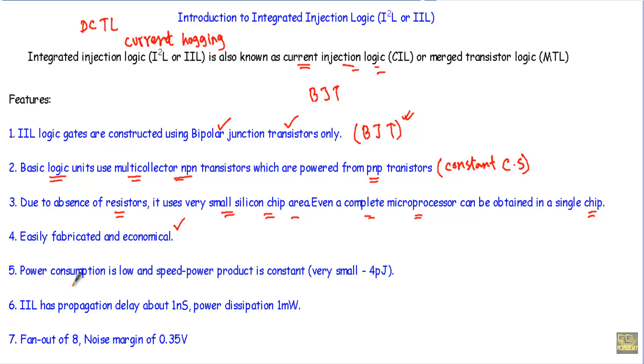Fifth one is that power consumption is low. And the speed power product, which is a very important property for any logic families, will be constant and very small, around 4 picojoules. Therefore, we can say that the Integrated Injection Logic is a very power efficient logic family.